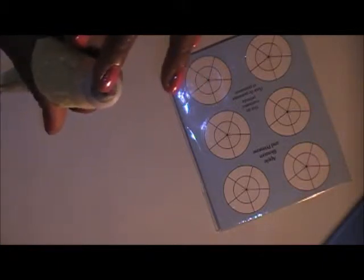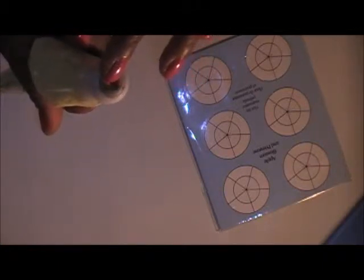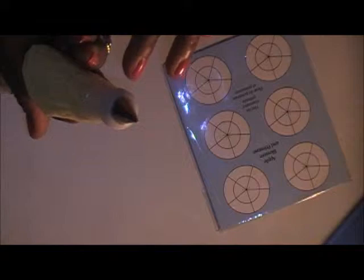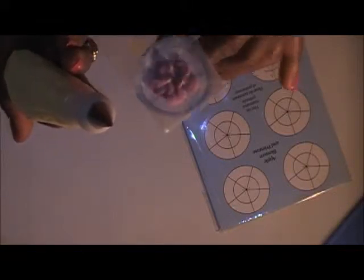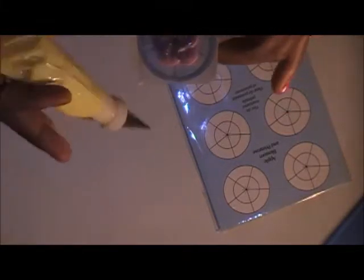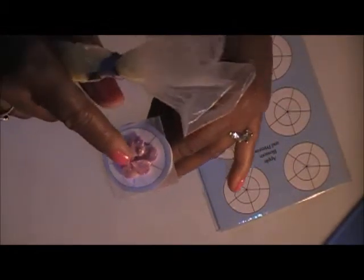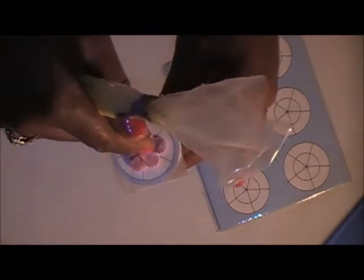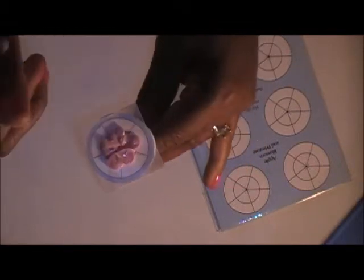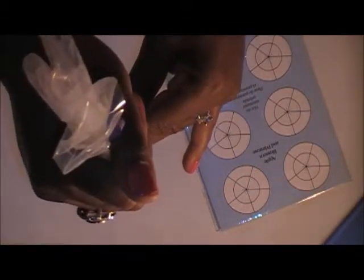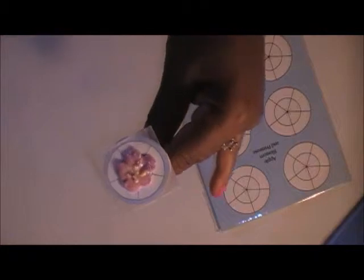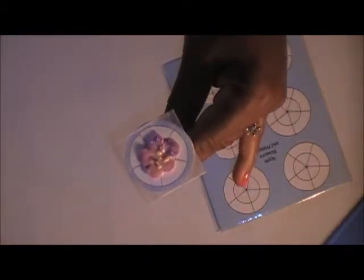Now we're going to make the stamens using tip number one, which is in the round family. It's the very smallest one, which is very difficult to use with buttercream. But since we're using royal icing, we shouldn't have an issue. We're going to make five dots. We're going to hold it at a 90 degree angle, straight up and down. We're going to put one dot in the center, and four surrounding. That's our Apple Blossom.